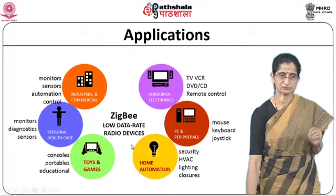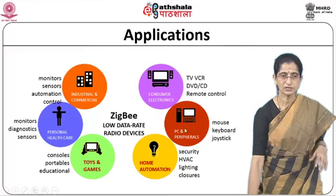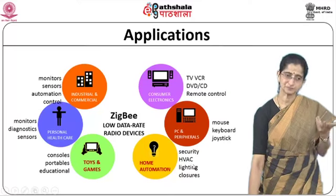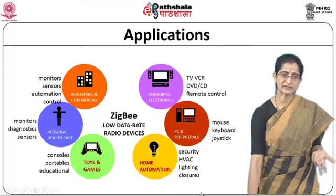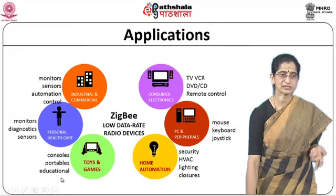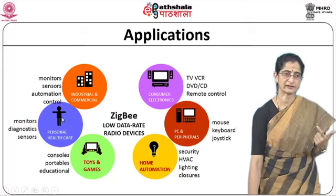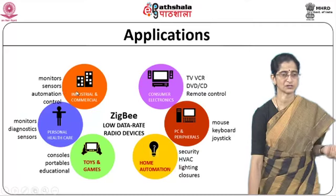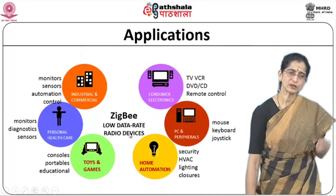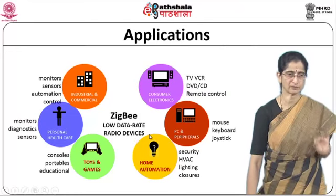Different applications envisaged for ZigBee include: consumer electronics such as TV, VCR, DVD remote controls; PC peripherals like mouse, keyboard, joystick; home automation including security, HVAC, lighting, and closures; toys and games for consoles, portables, and educational purposes; personal healthcare monitors and diagnostic sensors; and industrial and commercial monitors, sensors, and automation control. These ZigBee networks are all for low data rate radio devices that we should be able to communicate with.